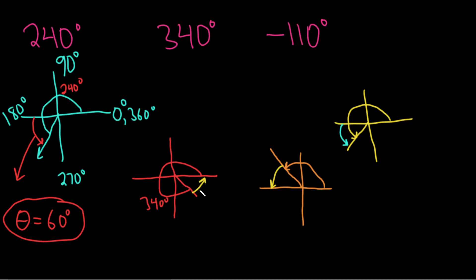So in this case, to get from 340 to 360, you simply need 20, right? So you need 20 more. And that would be our reference angle. So θ is equal to 20 degrees. Good stuff.